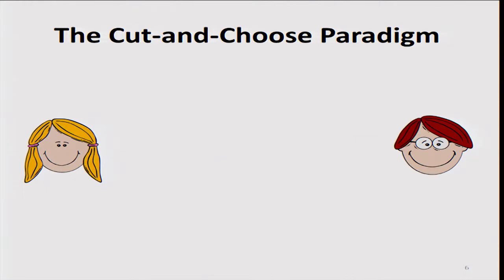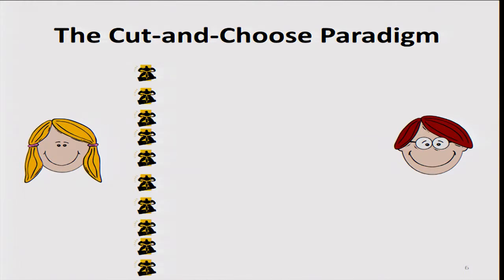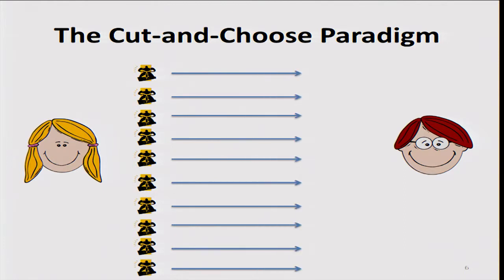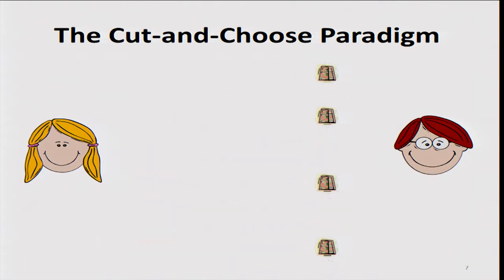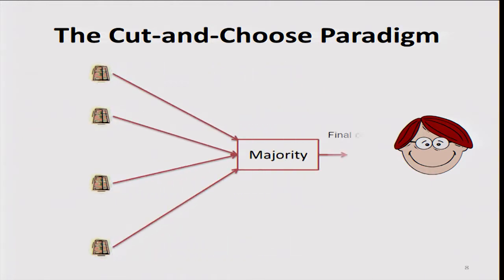The solution to this is what's called the cut-and-choose paradigm, loosely described as follows. Instead of Alice constructing one circuit, she constructs many circuits and sends them all to Bob. Bob chooses a subset and says he wants to check that they are all correct. Alice opens them and they check, then they compute on the rest of the circuits and take the majority output. The cut-and-choose guarantees that the vast majority of circuits sent by Alice are correct, not necessarily all of them. If Alice had sent many incorrect circuits, Bob would have caught Alice. So Bob takes the majority output to be sure he's taking the correct output.